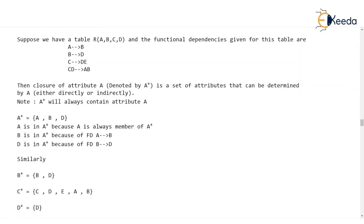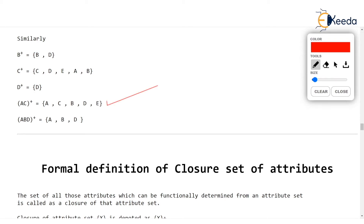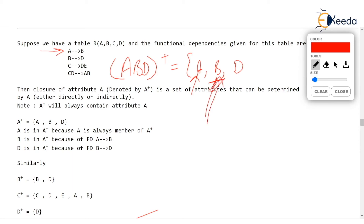As shown at the bottom of the screen, AC+ contains all the attributes and ABD+ contains only A, B, D. Check for yourself: ABD+ will contain A, B, D. A derives B but B is already there; B determines D but D is already there. Taking these three attributes alone or in combination, we don't have any combination of A, B, and D on the left-hand side that can bring in anything new. So ABD+ is simply A, B, D.